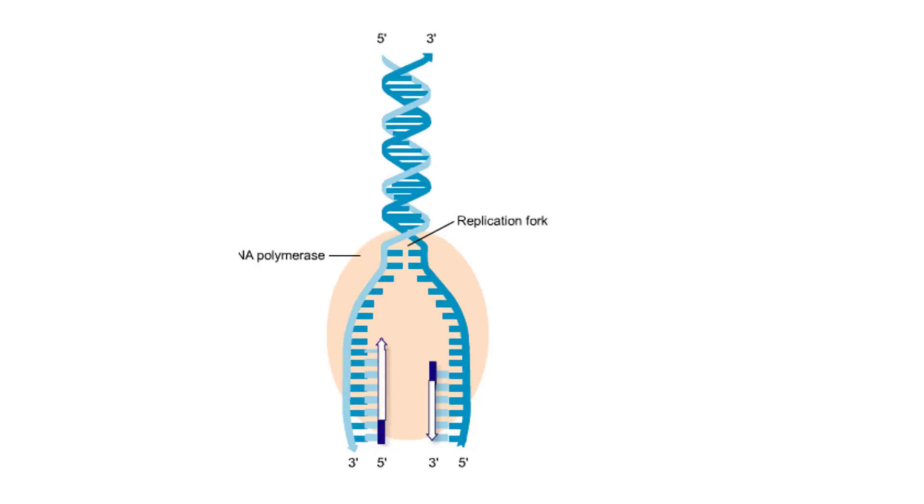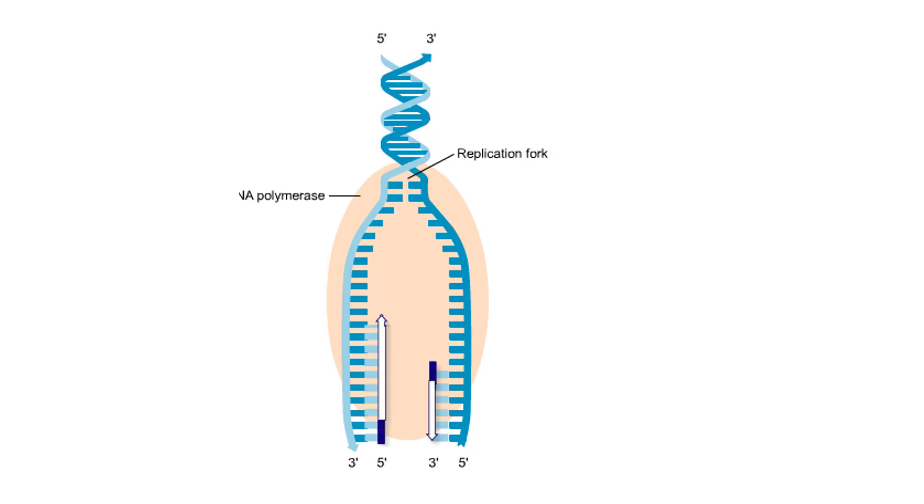As the replication fork moves forward, the DNA strand that is being made in the direction of the replication fork, that is in the 5' to 3' direction, is synthesized continuously. There is no need for an additional priming event.